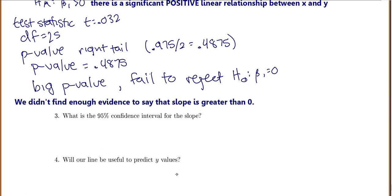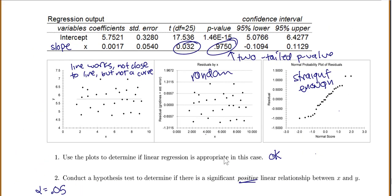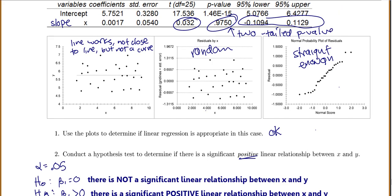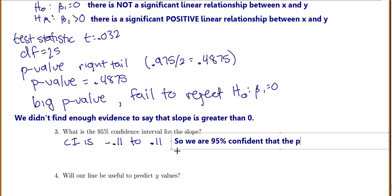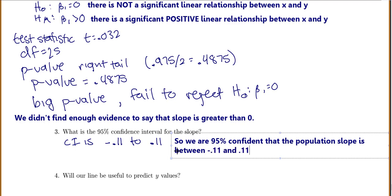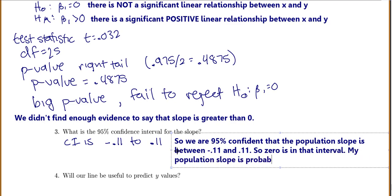Now, it might be interesting to look at what is our confidence interval for our slope. All you have to do is look at the output which goes from negative 0.1094 to 0.1129. So if we round just a little bit, the confidence interval is negative 0.11 to positive 0.11. So we are 95% confident that the population slope is between negative 0.11 and 0.11. So 0 is in that interval. My population slope is probably 0.